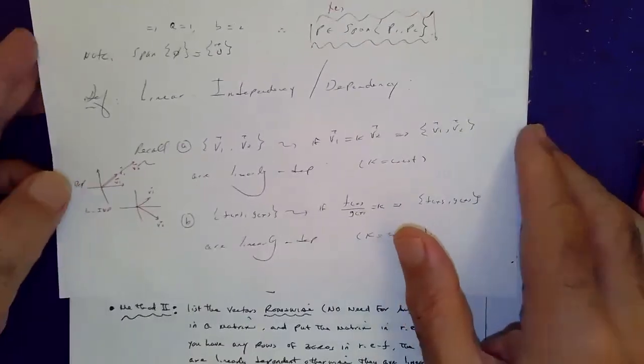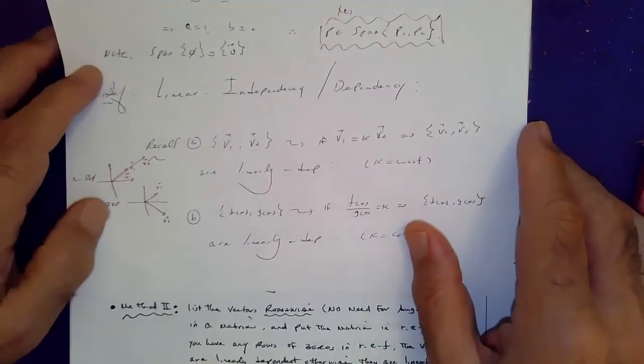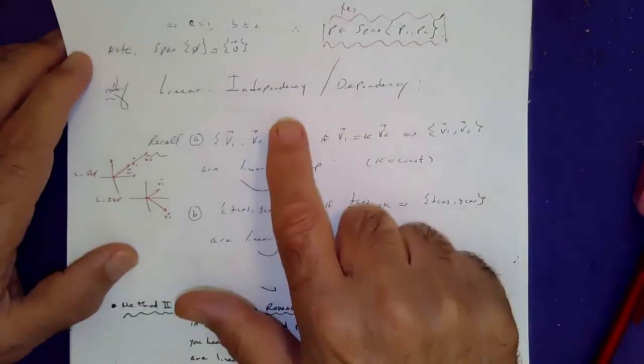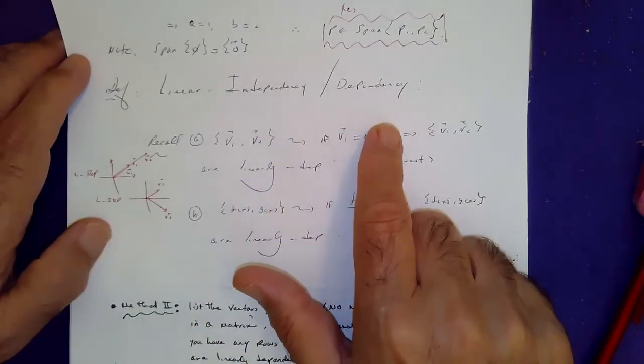Now that we know a little bit about linear combination and the spanning set, we are equipped with enough information to define linear independency and dependency.